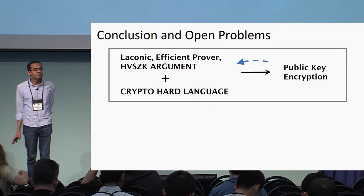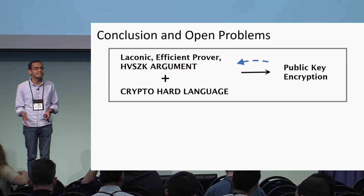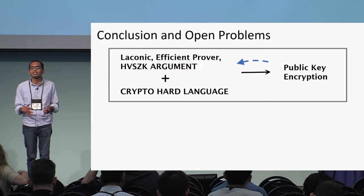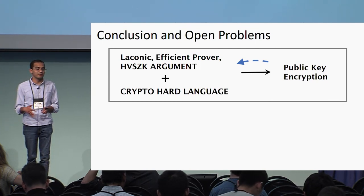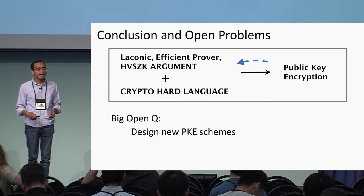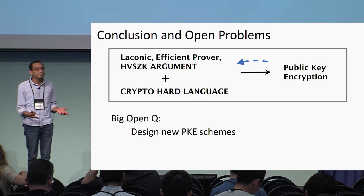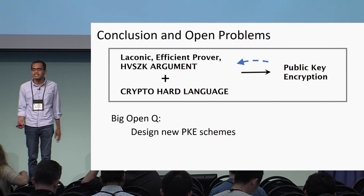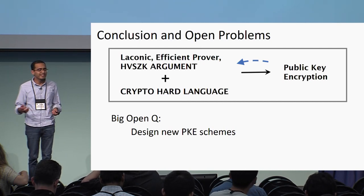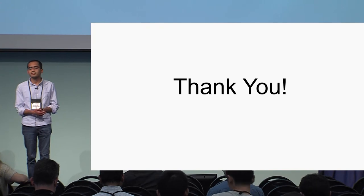To conclude: what we showed is that laconic efficient-prover honest-verifier zero-knowledge arguments imply public key encryption. A big open question is: can we use this to design new public key encryption schemes? Thank you very much.